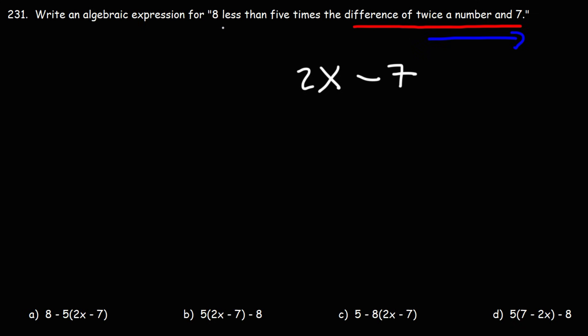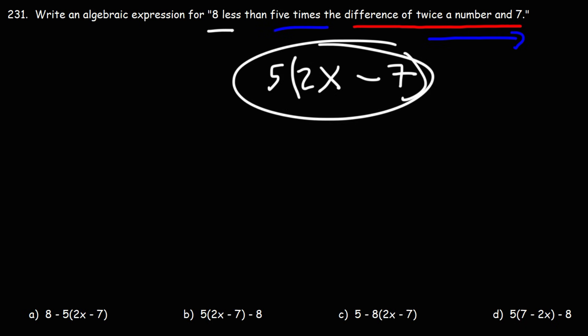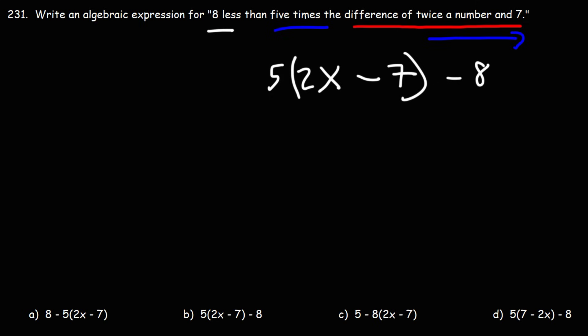8 less than 5 times the difference of twice a number and 7. First, let's focus on 5 times the difference. This whole thing is the difference of twice a number and 7. We want 5 times that, so we need to put a 5 outside of that. And then this is 8 less than all of this, so whatever this is, we need to subtract 8. So the correct answer for this one is answer choice B.